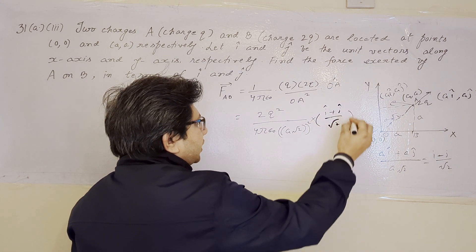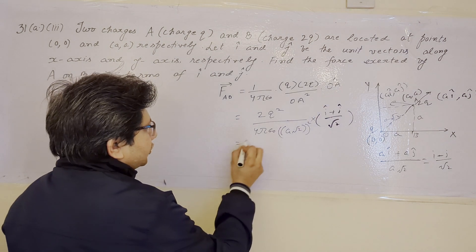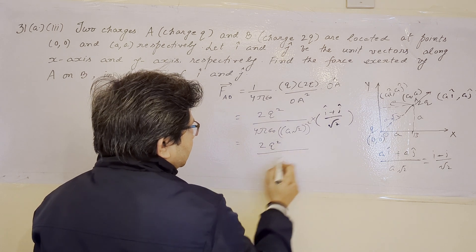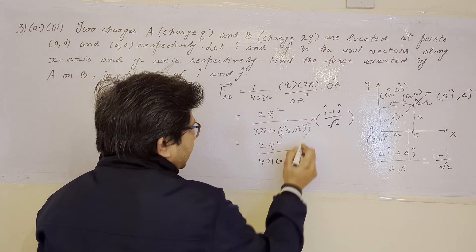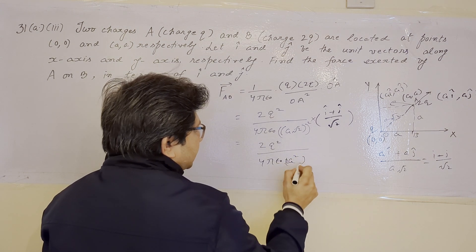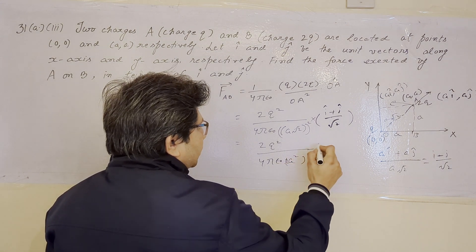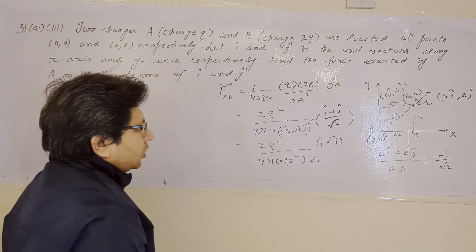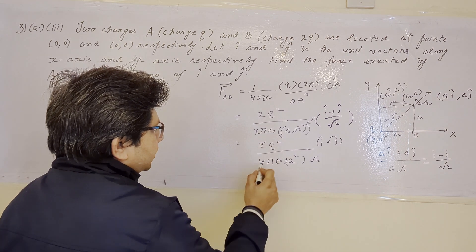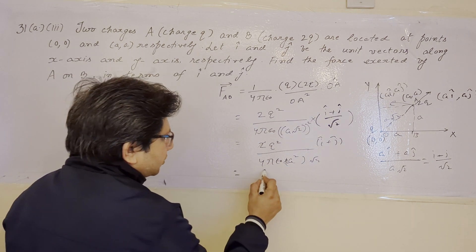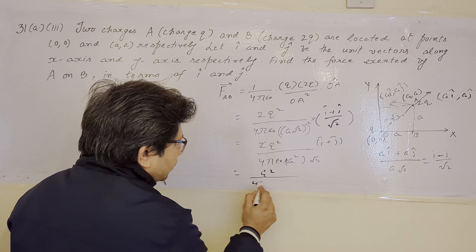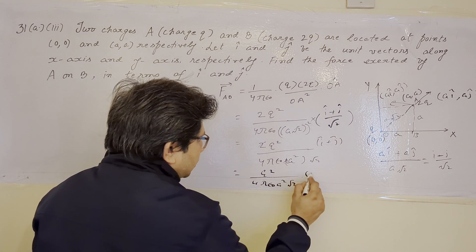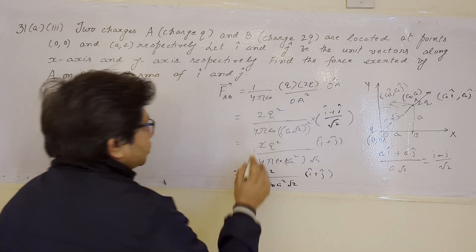Continuing the solution, we get 2q² divided by 4πε₀ times 2a² (since (a√2)² = 2a²), multiplied by (î + ĵ)/√2. The factor of 2 in the numerator cancels with the 2 in the denominator 2a².